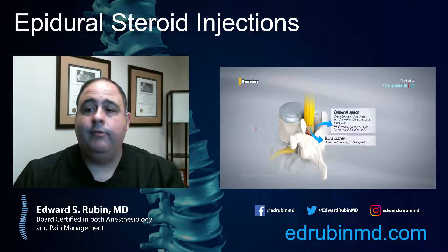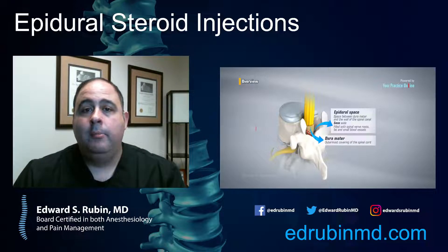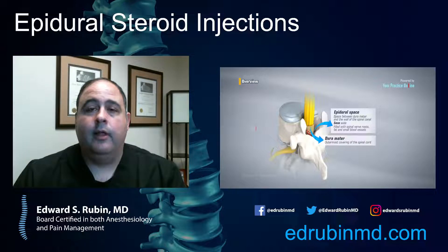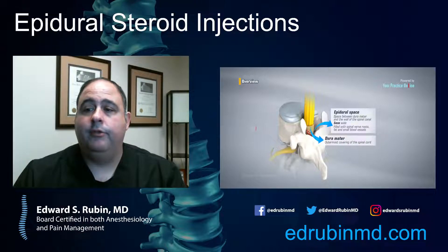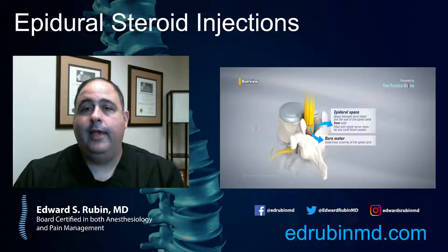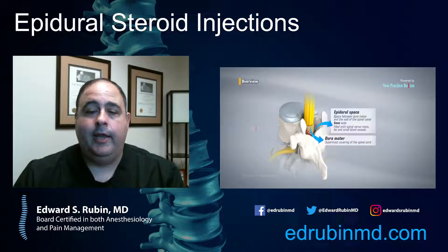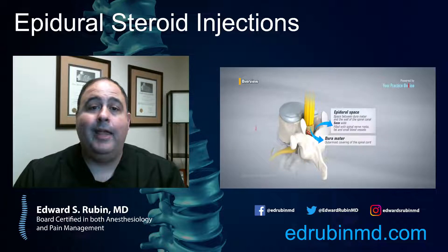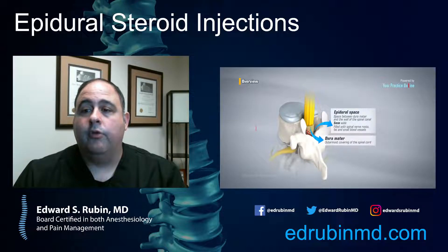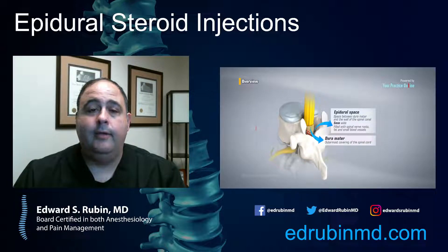The epidural space is a potential space in the back. It's not a wide open space, but it is a space you can get into using a technique called loss of resistance. Below the epidural space is the dura mater, which separates your spinal fluid from the epidural space. The goal is to get into the epidural space, not go through the dura. Once you go through the dura, you're basically doing a spinal tap and the patient could get a headache. This is all done under x-ray guidance so we can safely target the epidural space and not beyond it.